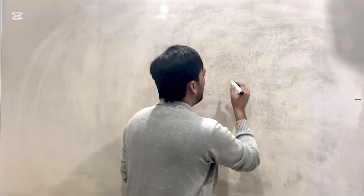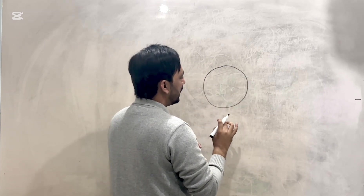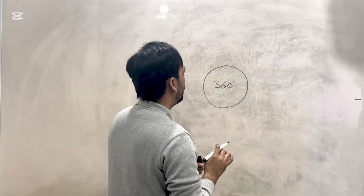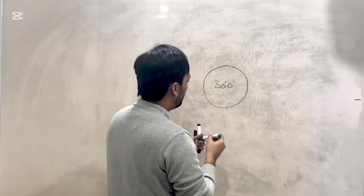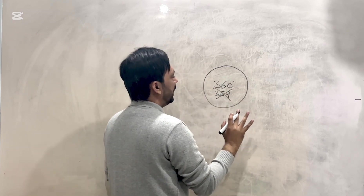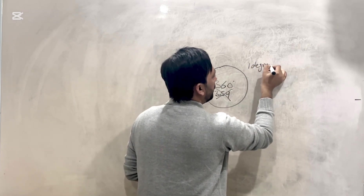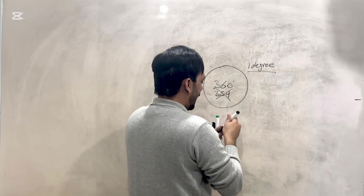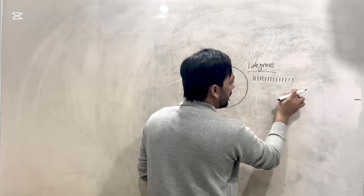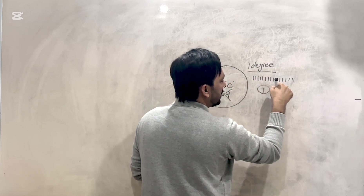Let's have a brief concept about the minute of arc. For example, this is a round circle and you know very well that in a round circle there are 360 degrees. I just ignore 359 degrees and pick one degree out of 360 degrees. Then I divide this one degree into 60 different parts, and I pick one out of these 60 parts.